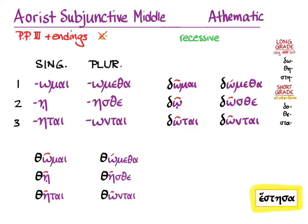For the aorist subjunctive middle of didomi and tithemi, we have: didomi — domai, doi, dotai, dometha, dosthe, dontai; tithemi — themai, thei, thetai, themetha, thesthe, thentai. That's it for the subjunctive.